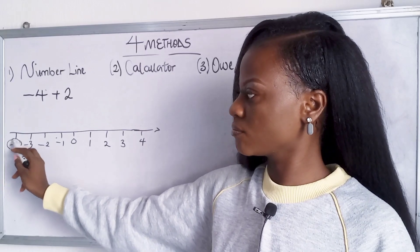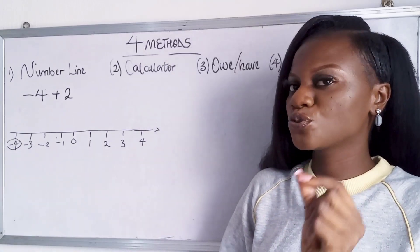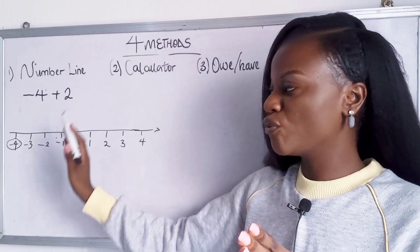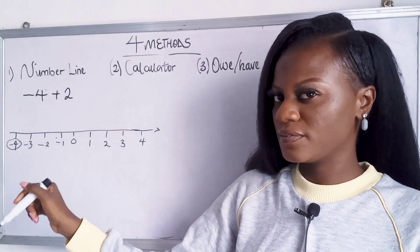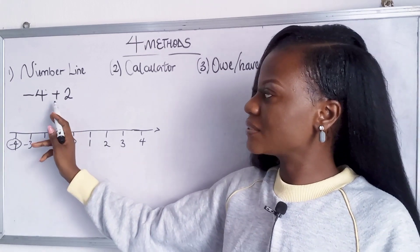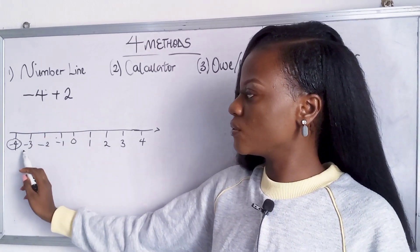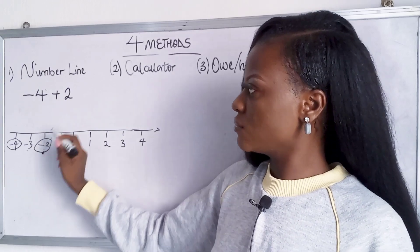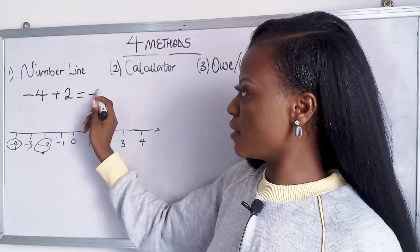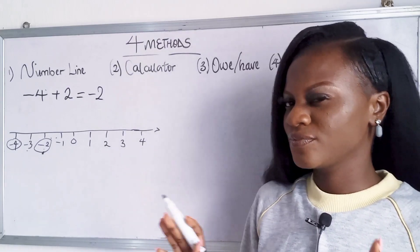Now I'm going to stop at minus four because that is what our question says. It says minus four plus two. Now when you're asked to add you move to the right but when you're asked to subtract you move to the left. Okay so now we're asked to add two so we're moving to the right one, two, which means our answer is minus two. Did you get that?